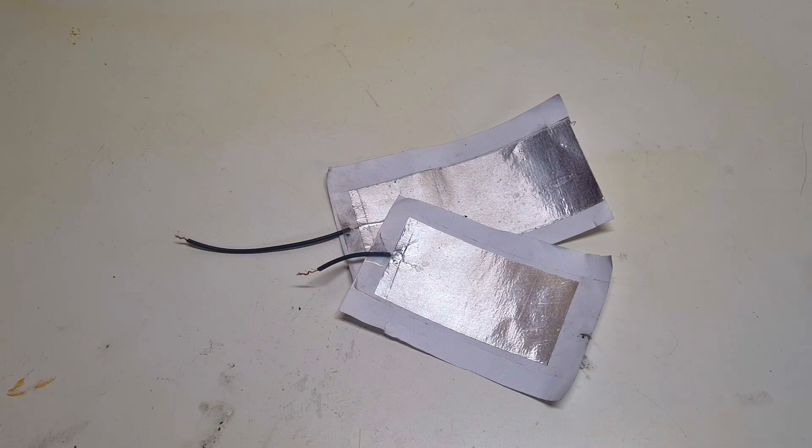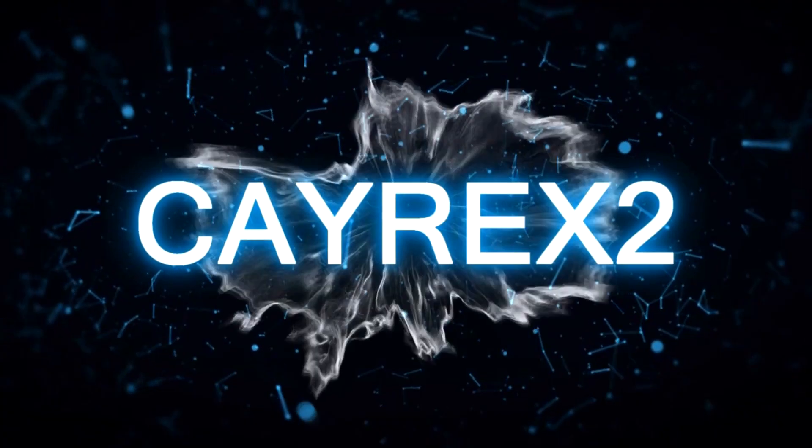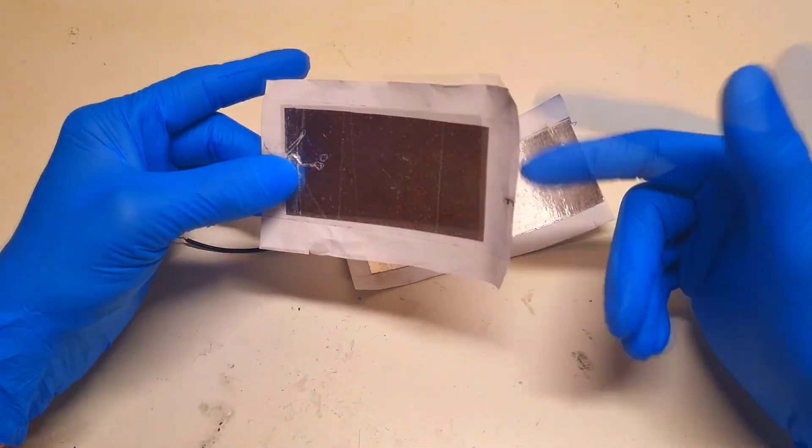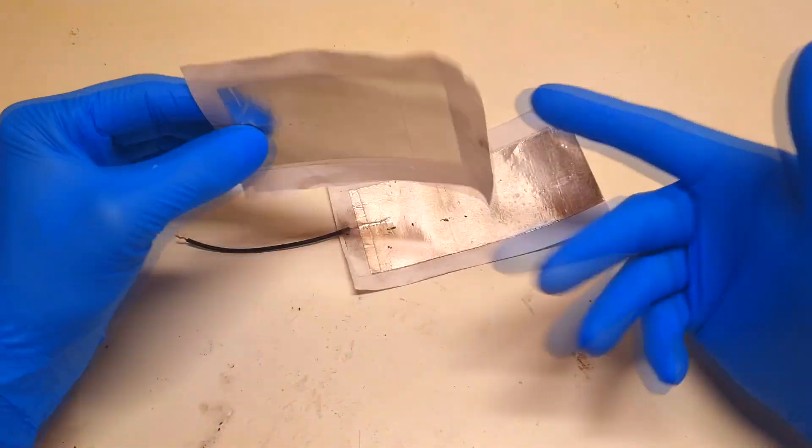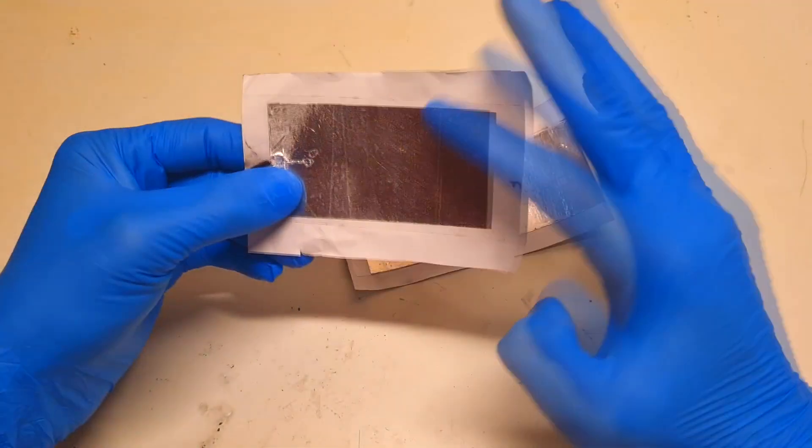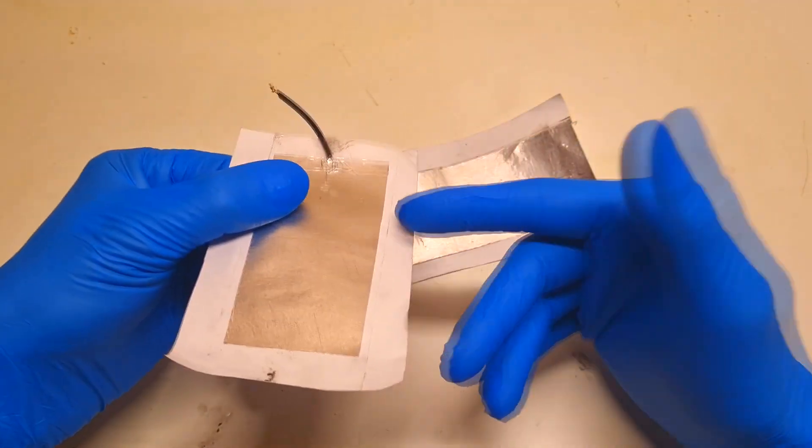In my previous video I made this triboelectric generator. It was really easy to make because all I needed was some piece of paper, some aluminum, and some normal tape on top.